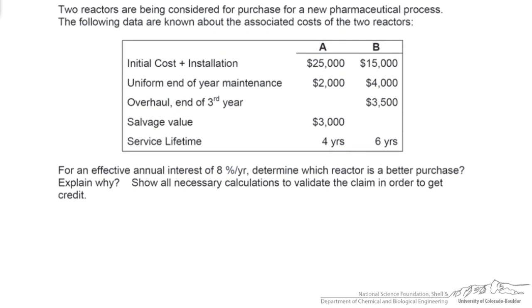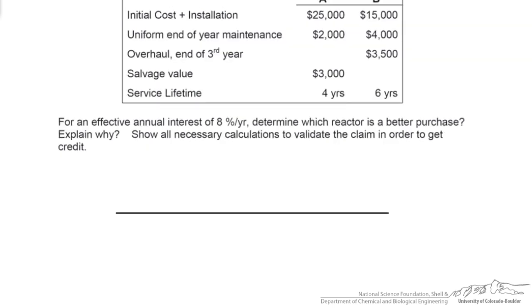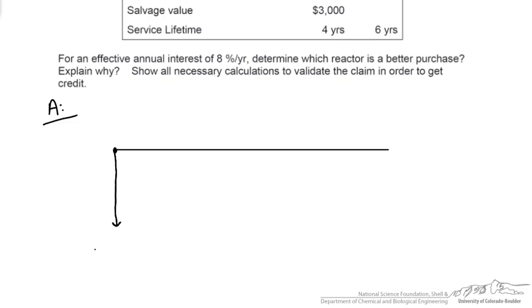Let's look at what's known as a present worth analysis. So we're going to start with a cash flow diagram. I'll step by step through reactor A and then show you what it looks like for reactor B. At the beginning of our timeline, time zero, we have an initial cost and installation of $25,000. So we draw an arrow in the negative direction and label this as negative $25,000.